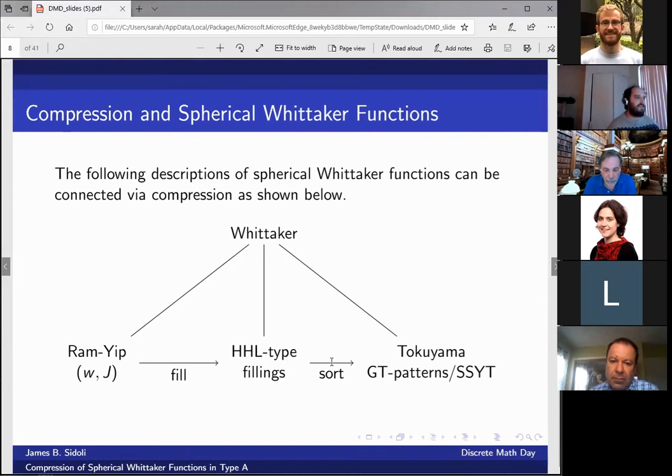The sort map is very easy to define. You simply take one of these HHL type fillings, which I'll define later, and you sort the columns of it. And so we want to study the preimages of each of these maps.